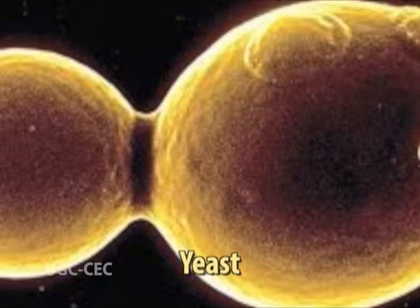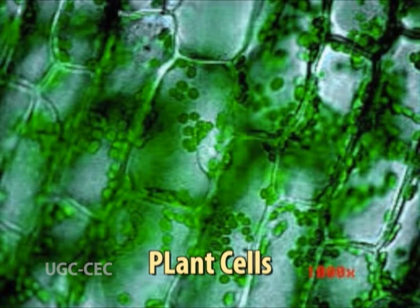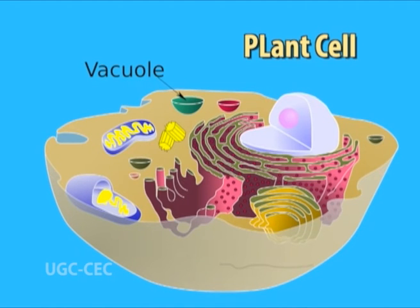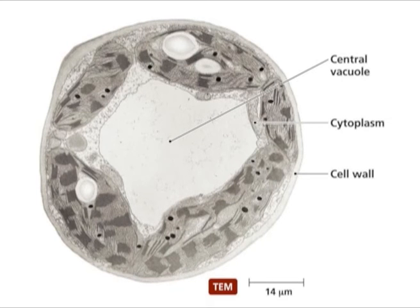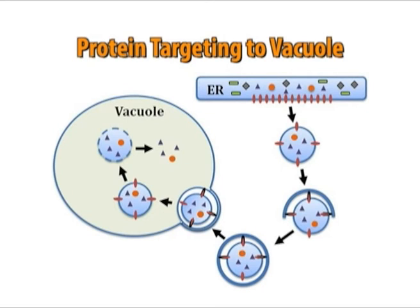In yeast and plant cells, which lack lysosomes, proteins are transported from the Golgi apparatus to the vacuole. Vacuoles assume the functions of lysosomes in these cells, as well as performing other tasks such as storage of nutrients and maintenance of turgor pressure and osmotic balance. In contrast to lysosomal targeting, proteins are directed to vacuoles by short peptide sequences instead of carbohydrate markers.